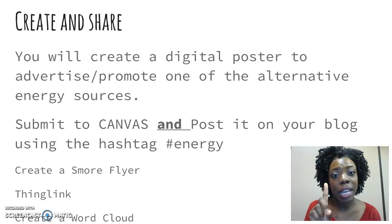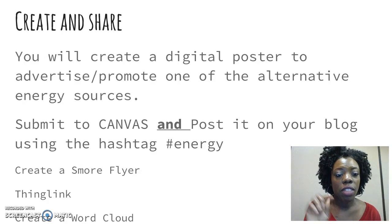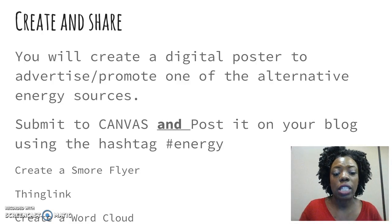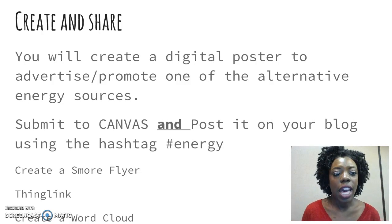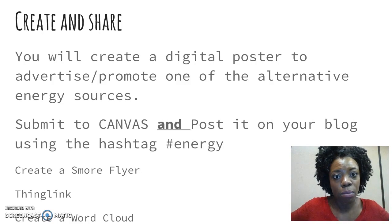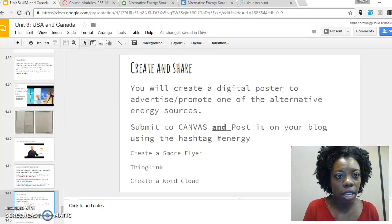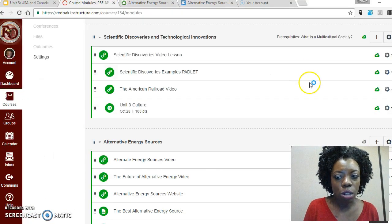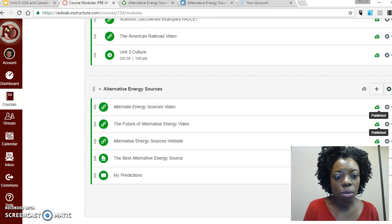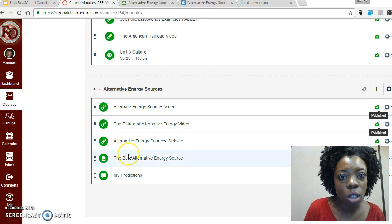I want you to submit this to two places. The first place is Canvas — there will be a spot in the module that says 'The Best Alternative Energy Source,' and you're going to put a link to whatever you created there. When you go to your module, you'll see links to all of the things I just told you in this video.